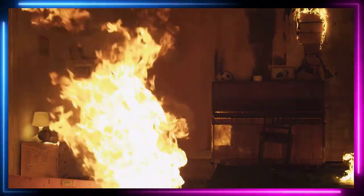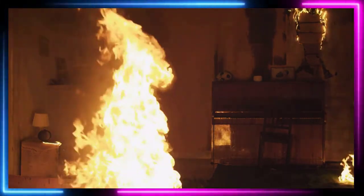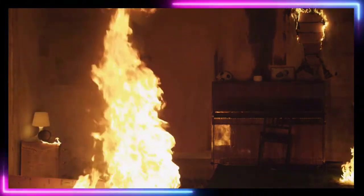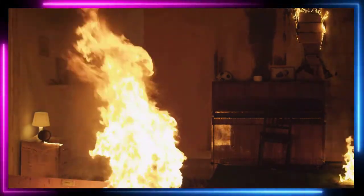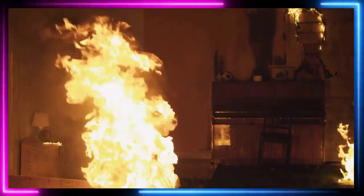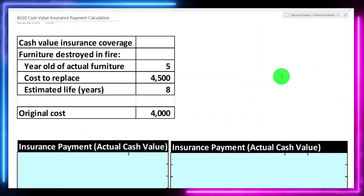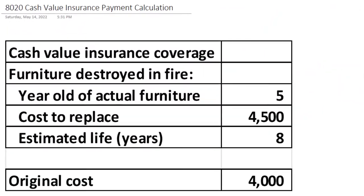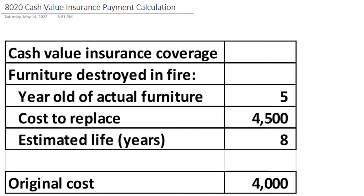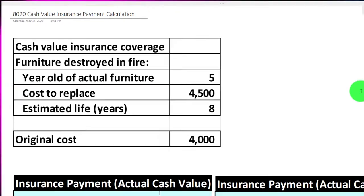So we're imagining that the furniture was covered under cash value insurance coverage. The furniture was five years old, it costs $4,500 to replace, the estimated life is eight years, and the original cost — what we paid for the furniture — was $4,000.